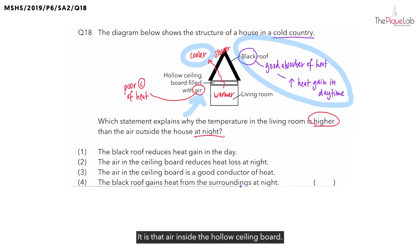It is the air inside the hollow ceiling board. Now since air is a poor heat conductor, should it increase or reduce the heat loss from the warmer living room to the cooler air at night? It should reduce the heat loss to the cooler air at night.